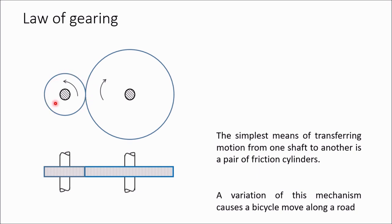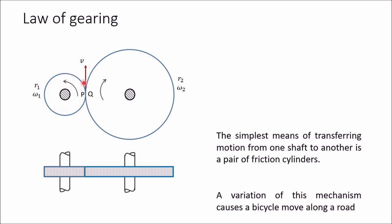Suppose this friction wheel is the driving wheel rotating in the anticlockwise direction; then the driven wheel will move in the clockwise direction. To analyze the motion of these two cylinders, assume radius of the small cylinder as r1 and angular velocity as omega1, and the radius and angular velocity of the big cylinder as r2 and omega2. There is one contact point between these two cylinders, and the velocity at this contact point is assumed to be v. One point is on each cylinder; let these be p and q. The velocity of point p is omega1 times r1, and the velocity of point q is omega2 times r2.